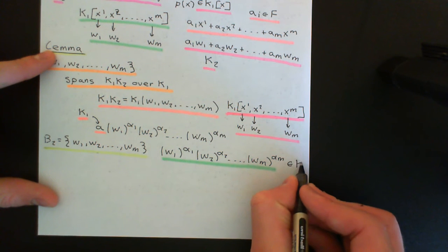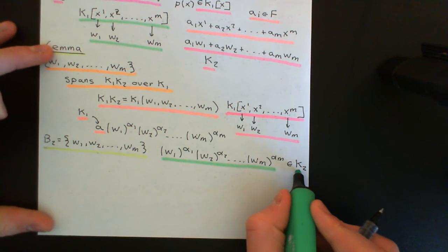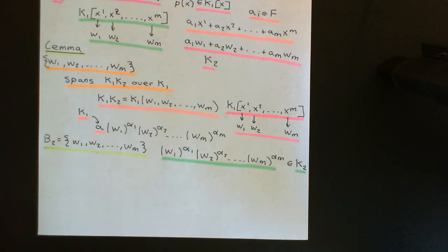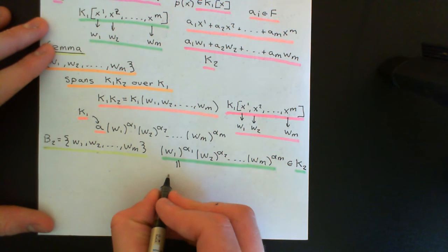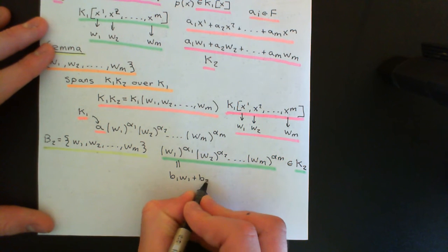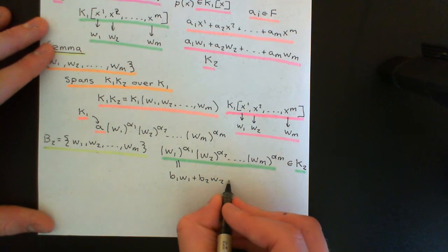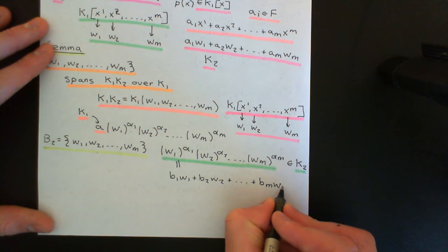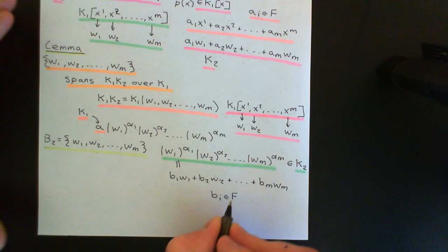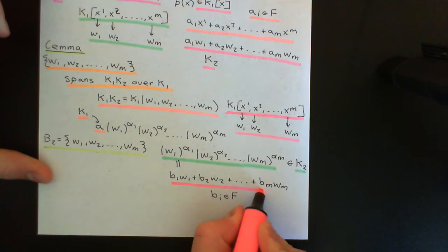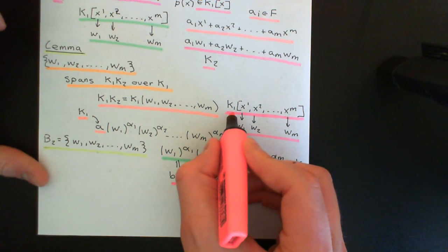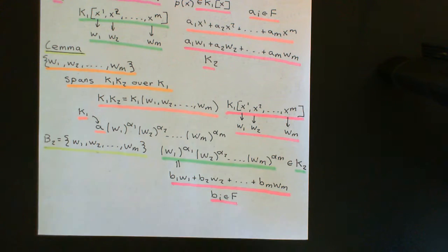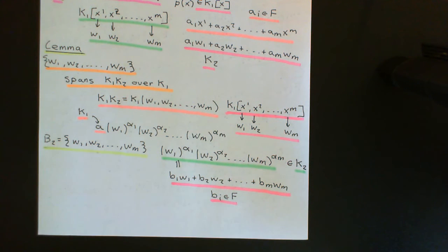Since anything in k2 can be written as a linear combination of the basis vectors w1,...,wm with coefficients from F, we can write this complicated monomial as b1·w1 + b2·w2 + ... + bm·wm where the b_i's are from field capital F. This is the ingenious step — these incredibly complicated monomials, when evaluated at w1,...,wm, can be reduced to an F-linear combination of w1, w2, all the way up to wm.